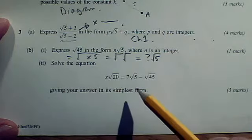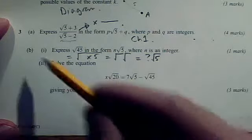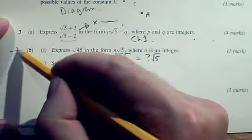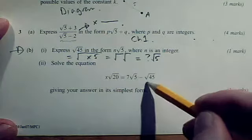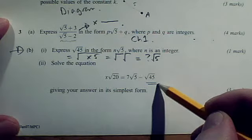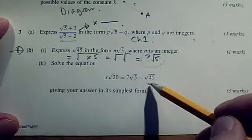And then to solve this equation, parts of questions normally link together. A is separate here, B is a re-entry point, but B.ii, although it doesn't say hence, we can see a root 45. So that's a bit of a hint that we should use the expression you got in B.i for the root 45, because that's got root 5s in it.